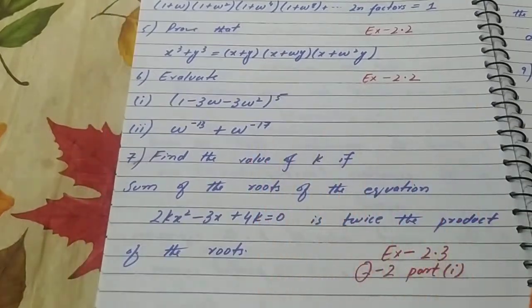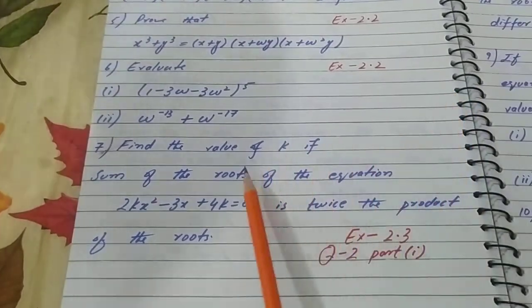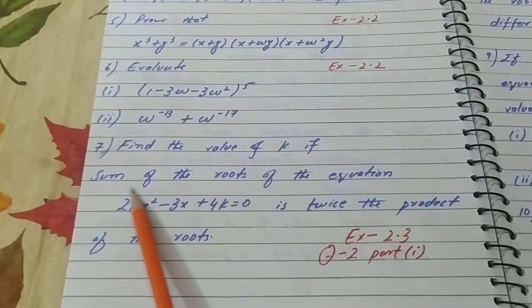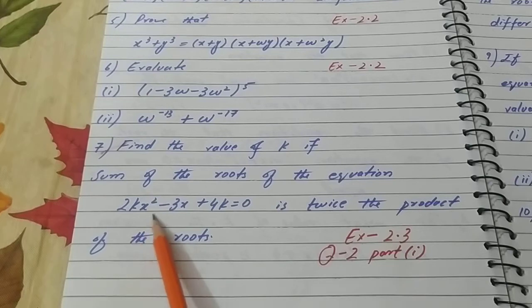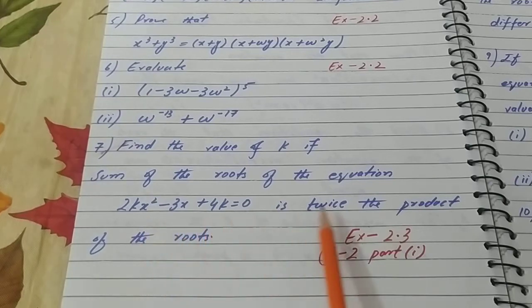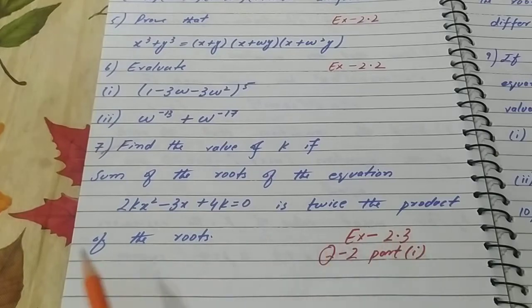Question number 7: Find the value of k if the sum of the roots of the equation 2kx² - 3x + 4k = 0 is twice the product of the roots. This is Exercise 2.3, question number 2, part 1.